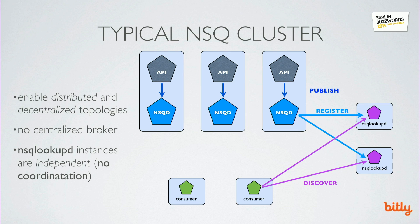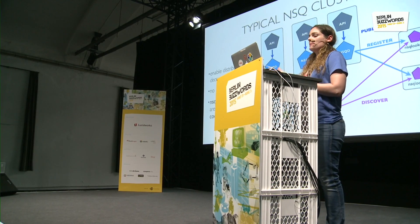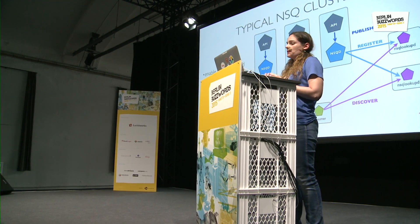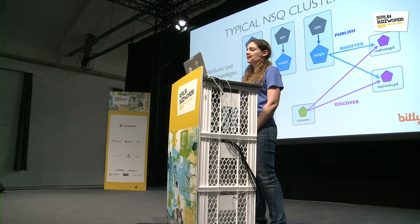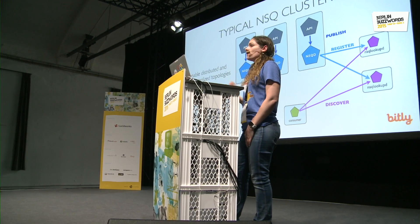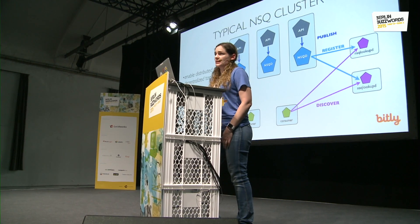Lookup D instances don't coordinate, so they each have their own independent copy of the mapping of topics to producers, which gives some nice fault-tolerant characteristics. You could lose one of these Lookup D instances and the others would continue to service requests just fine. In a typical data center you might see three of these. Why the need to add Lookup D? If we took Lookup D out of the picture, each consumer would need to hard-code the address of where each of the NSQD instances live. What you really want is for the configuration to evolve and be accessed at runtime based on the state of the NSQ cluster.